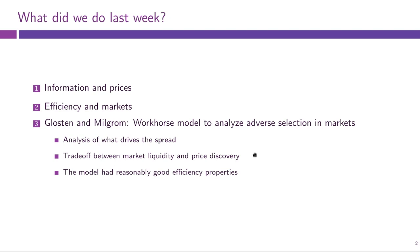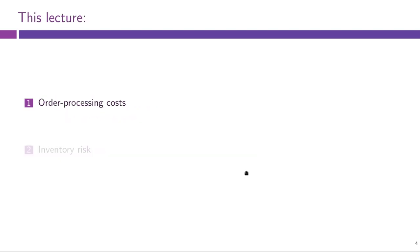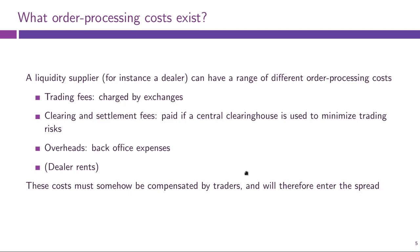We also saw that despite the presence of the bid-ask spread, prices were in fact efficient in those markets. What we will do today is consider two other factors that can generate the bid-ask spread, and begin talking about how the effects of these different factors differ — in particular, how we can empirically disentangle these different components of the bid-ask spread. We will begin by looking at order processing costs. Consider a dealer market, a market with a central intermediary — a market maker, a dealer.